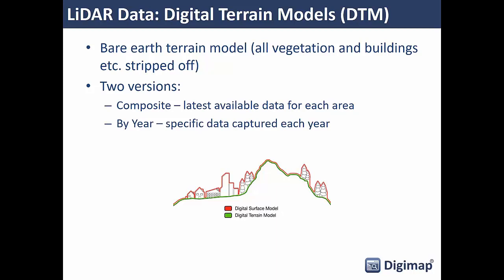The first dataset type is Digital Terrain Models (DTMs). These are effectively bare earth models — where all vegetation and man-made structures have been stripped off. It's what you would get if you scraped all the features off the top of the ground, giving you accurate terrain data from which you can build 3D models. In the infographic, the green line shows the digital terrain model — the surface underneath all the features like trees, buildings, and factories on top of it.